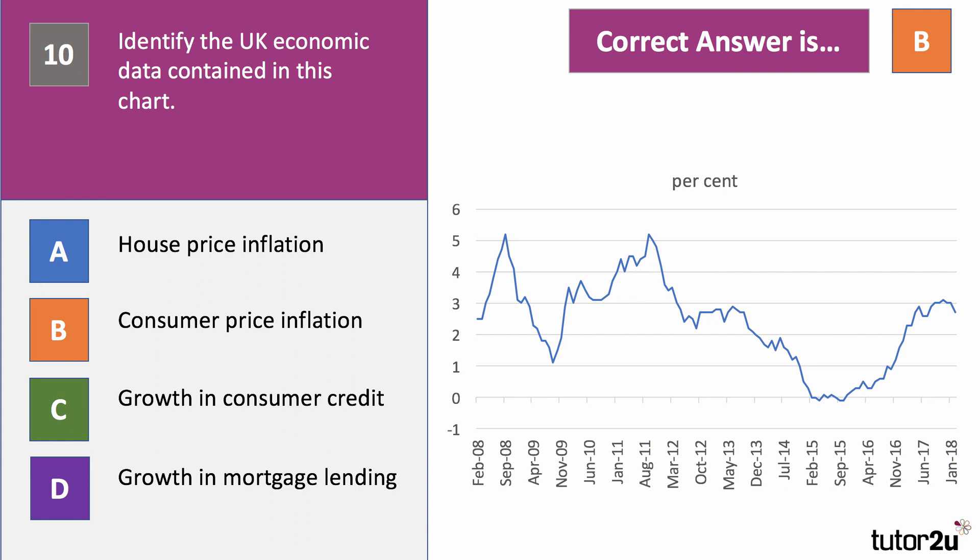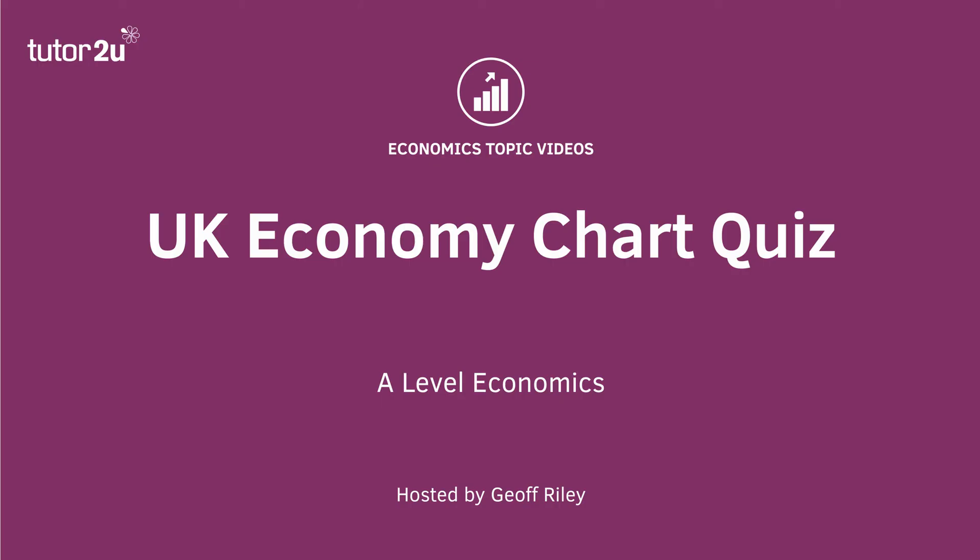The correct answer to our final chart is B — it's consumer price inflation, showing the 12-month percentage change in consumer prices, which tracks changes in the cost of living for an average family. We came close to deflation in 2015 with inflation falling below zero. Since then inflation picked up to just over 3%, partly because the pound fell sharply against the dollar and euro, pushing import prices up. Inflation is now falling back towards the Bank of England's 2% target. If you got more than half of those right, you've got a really good understanding of key data charts that often appear in economics exams.